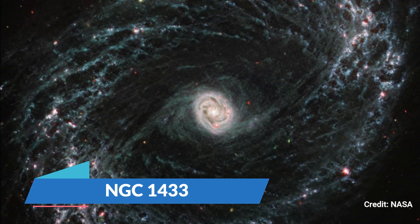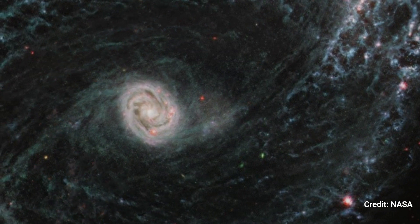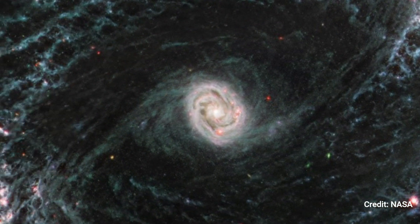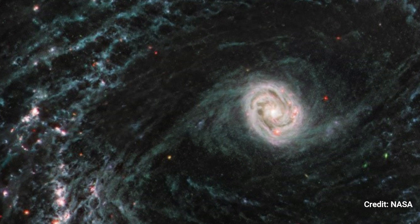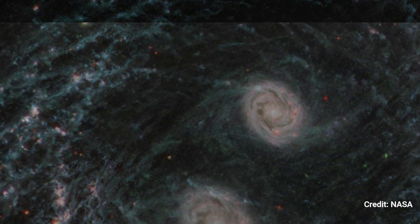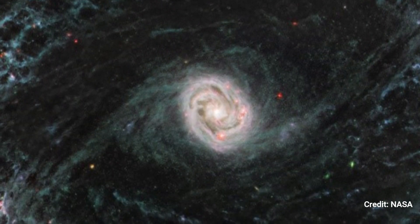NGC 1433. The James Webb Space Telescope captured this image of one of 19 galaxies chosen for investigation by the physics at high angular resolution in nearby galaxies team. When seen by Webb's mid-infrared instrument, the nearby barred spiral galaxy NGC 1433 takes on a whole different appearance.